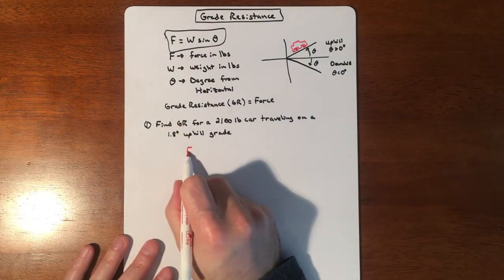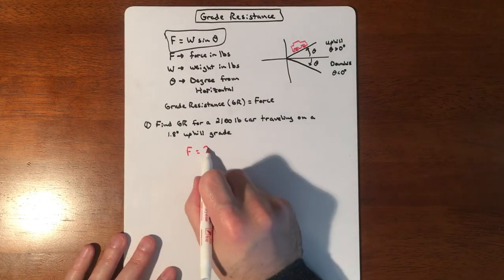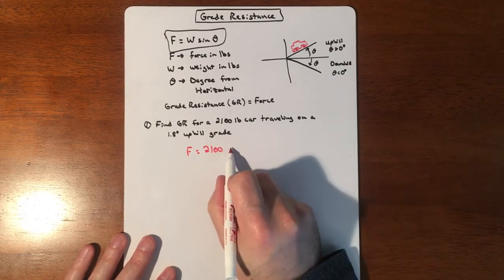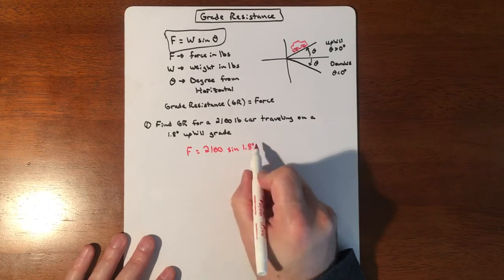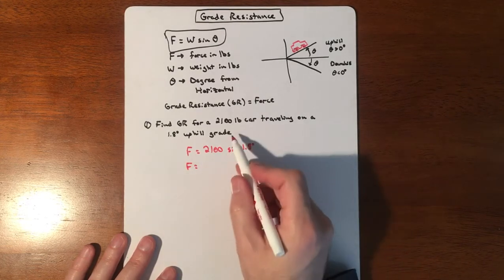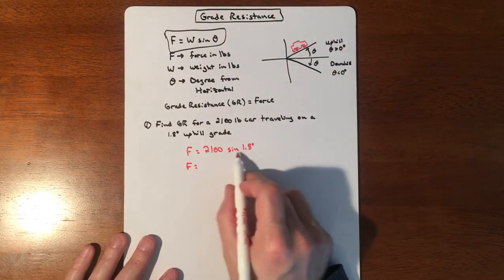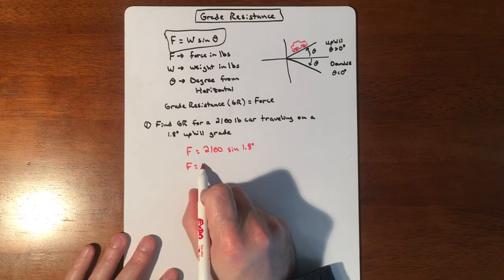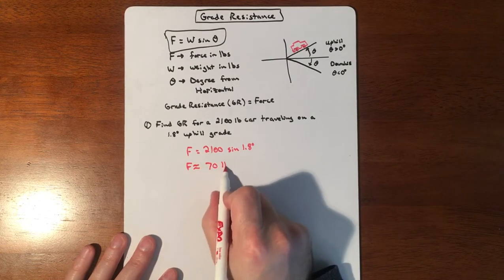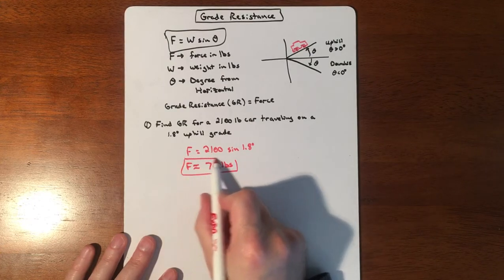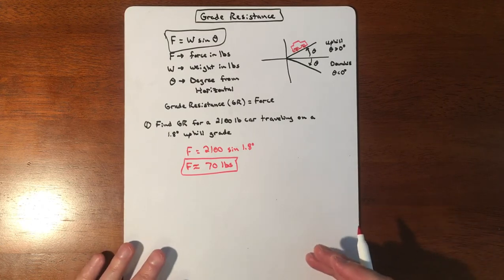It says find the grade resistance, which means we're finding the force applied. Our weight is a 2100-pound car times sine of 1.8 degrees, and we plug it into the calculator. We're going to round to the nearest pound. If you plug that into a calculator, you're going to get about 70 pounds. Not meant to be tricky, just a very brief introduction into the world of physics.